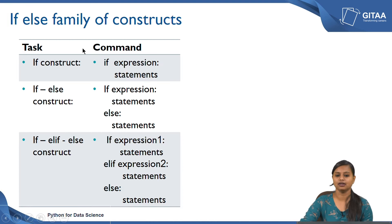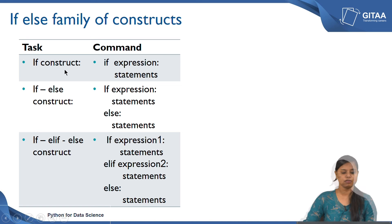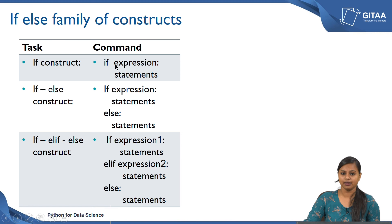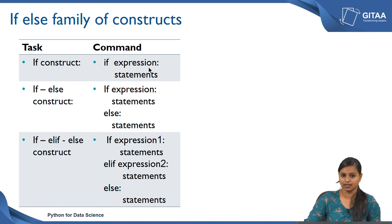Let us see the syntax for each construct. For the if construct, the command is: if expression colon, followed by statements in the next line. If is a keyword — if the condition you have given in the expression is satisfied, the statements will get executed; otherwise the code exits the construct itself.